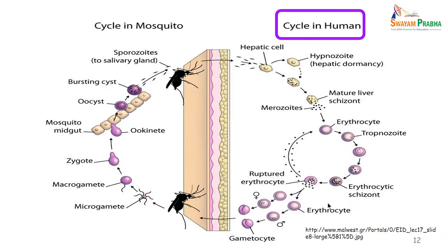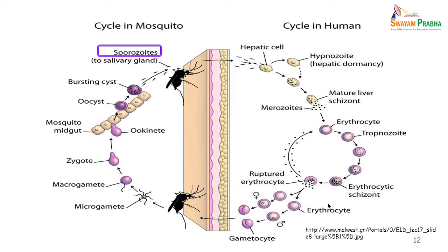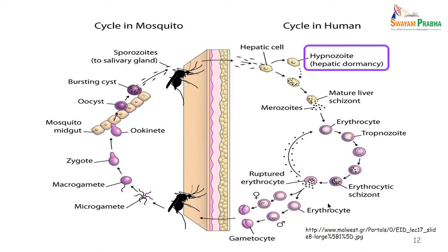Let us look at the life cycle in man. It is basically the sporozoite which is injected by the mosquito into the human host. These sporozoites are very slim and they enter the bloodstream, from where they go to the hepatic cells. Here they get converted into the schizont. Some of these sporozoites remain dormant in the liver and are called hypnozoites — they have been hypnotized by the liver and are lying there as lazy fellows.